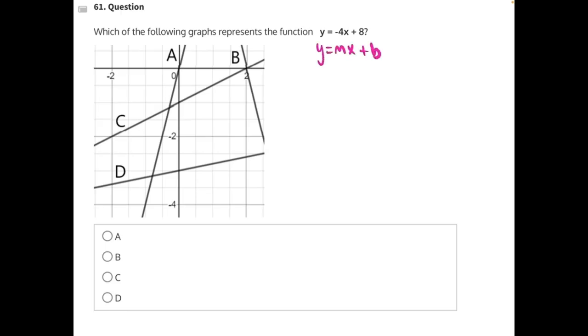So if we know that m is our slope, then we know negative 4 is our slope. And if we know that b is our y-intercept, we know that 8 is our y-intercept.